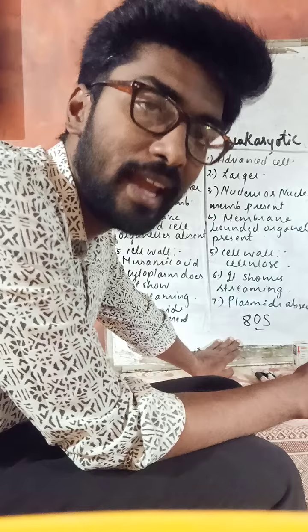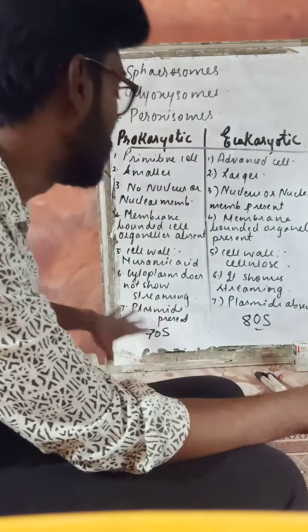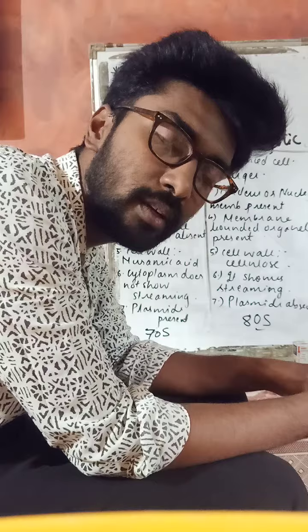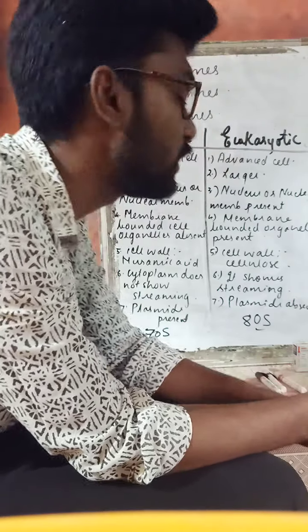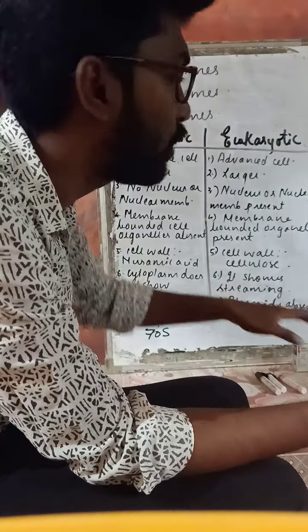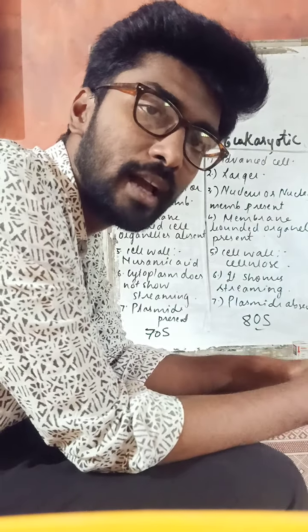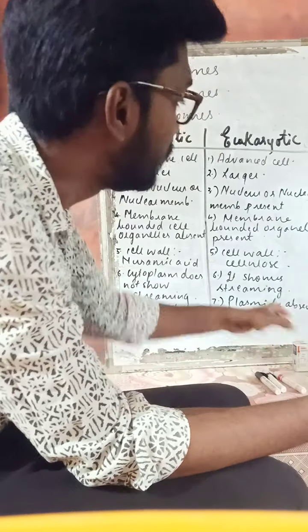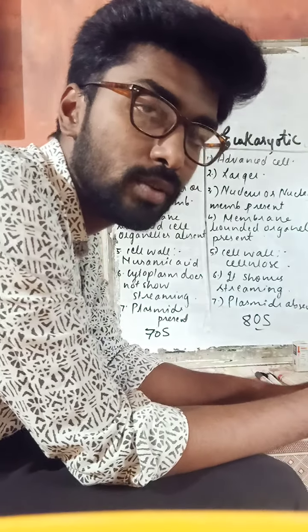Examples of prokaryotic cells include all bacteria, majorly cyanobacteria. Examples of eukaryotic cells include algae, fungi, plants, and animals — they all show eukaryotic organization. Thank you.